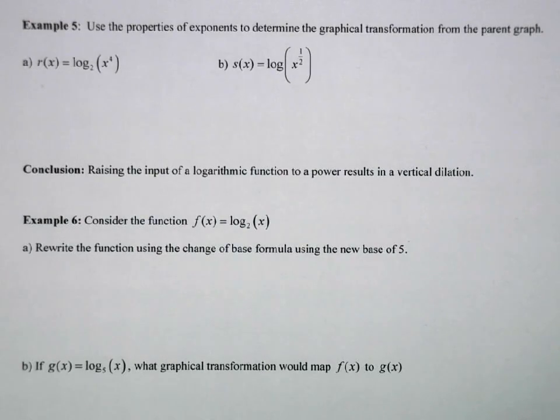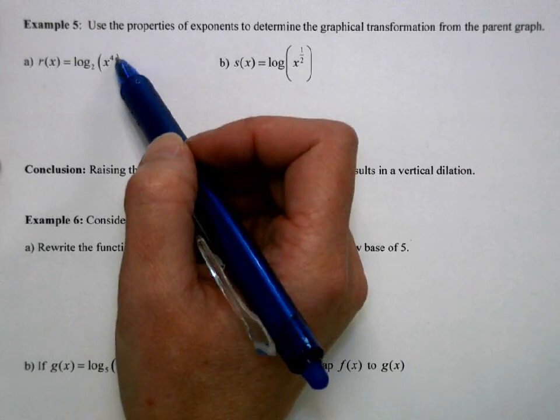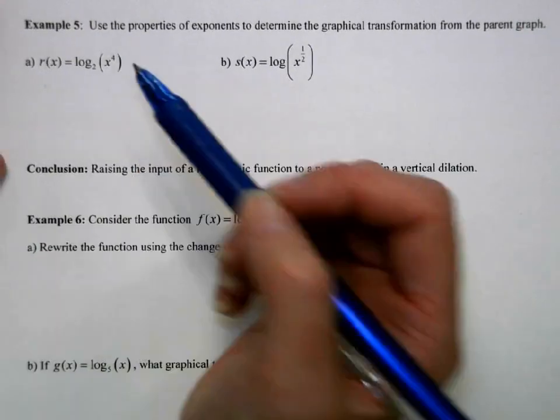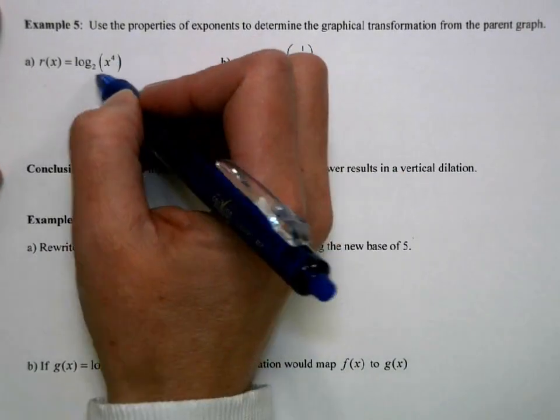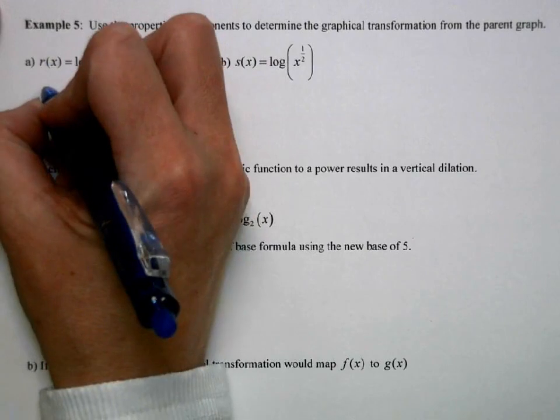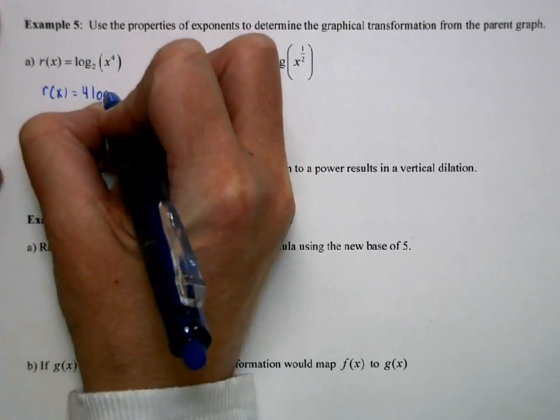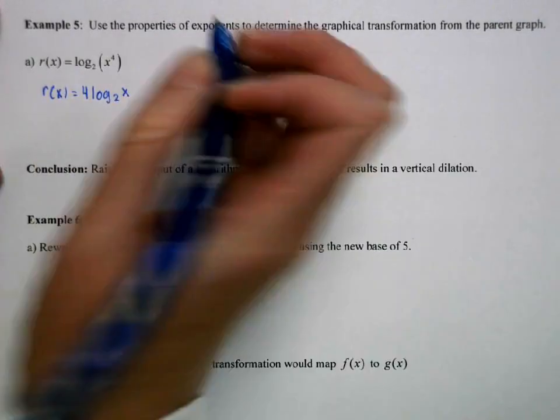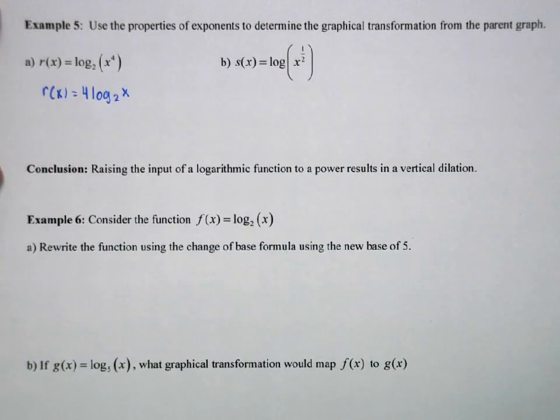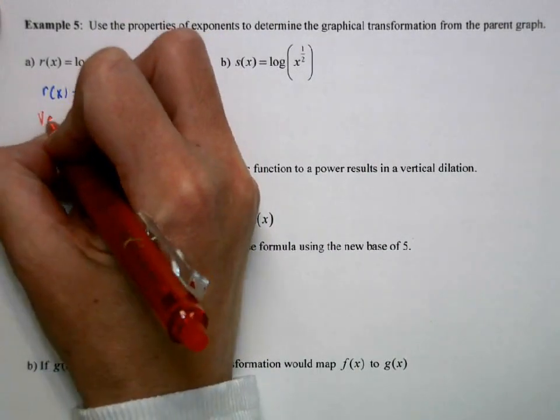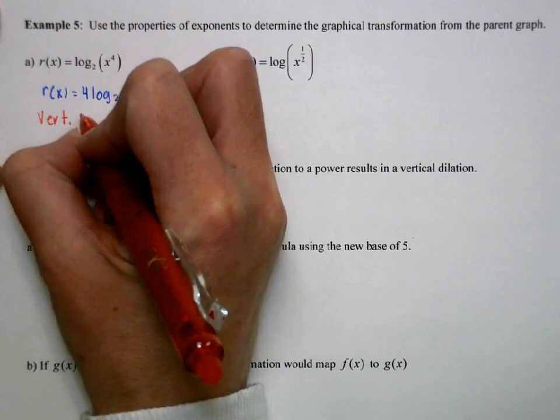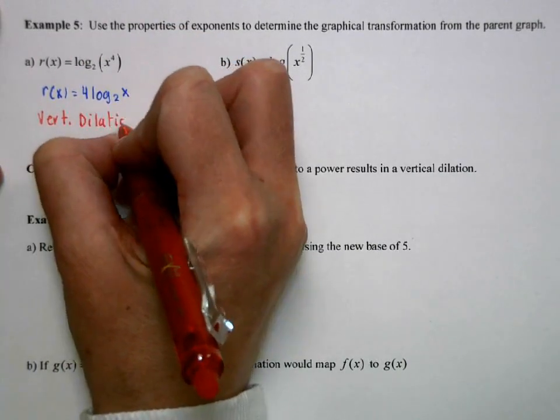So we have log base 2 of x to the fourth. Now that's not really a transformation we really talked about. But specific to logs if I've got log base 2 of x to the fourth I can rewrite that as 4 log base 2 of x which now I have a vertical dilation. My graph is going to be stretched vertically by a factor of 4.